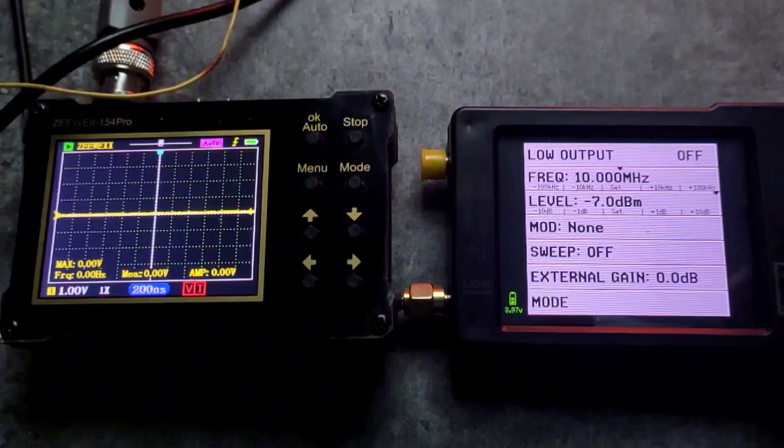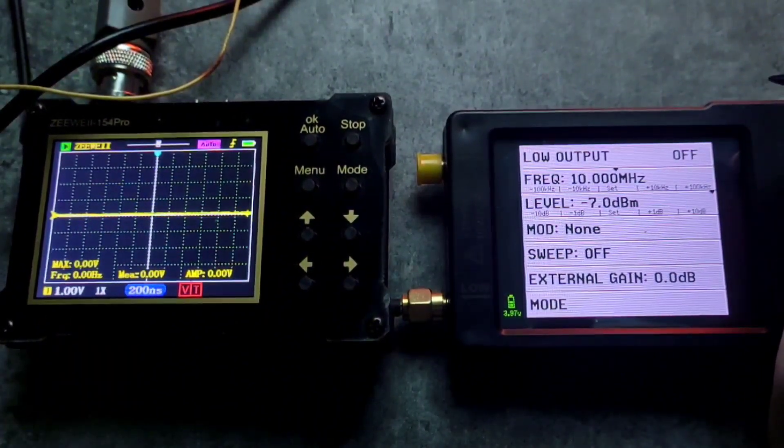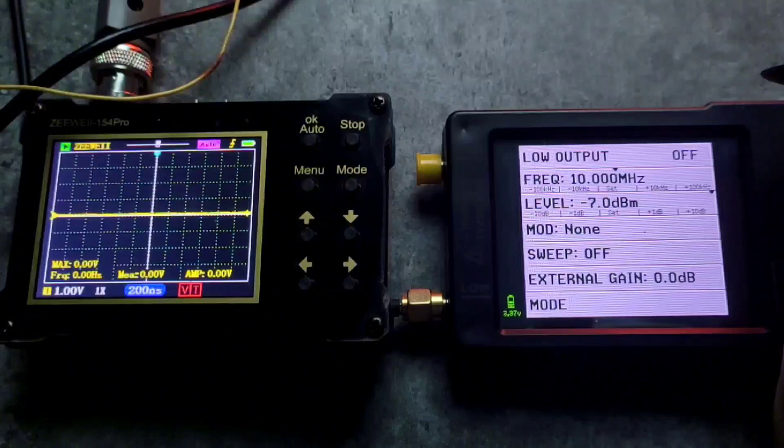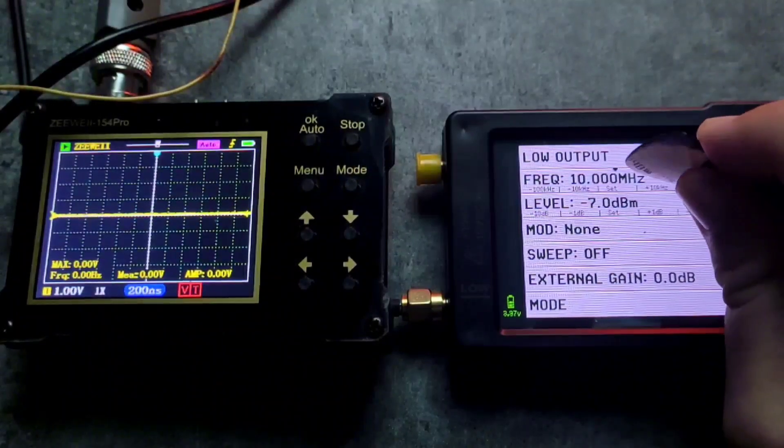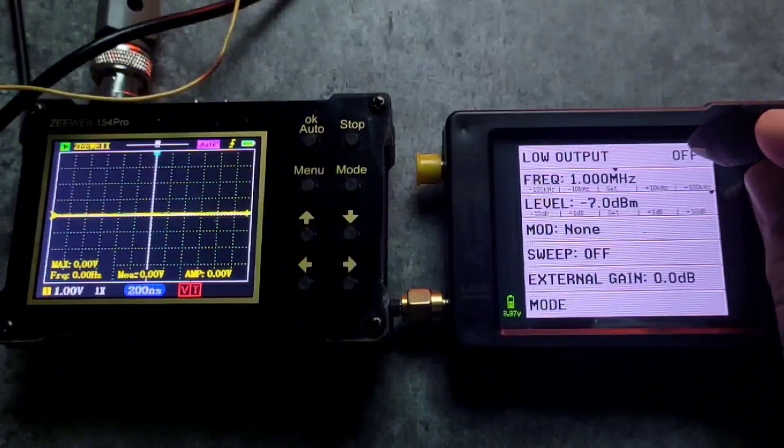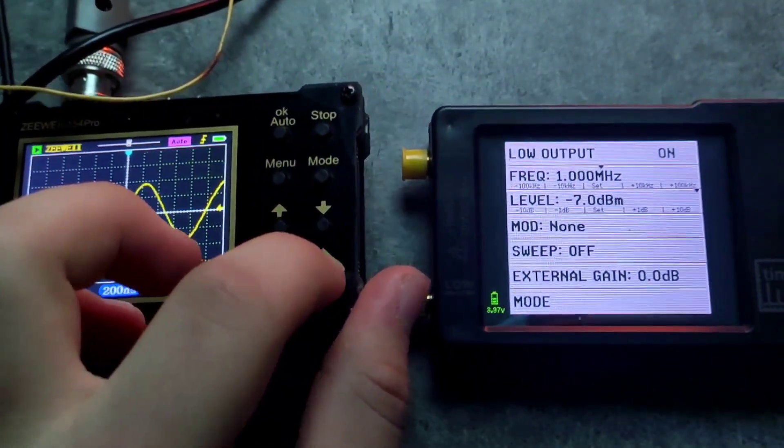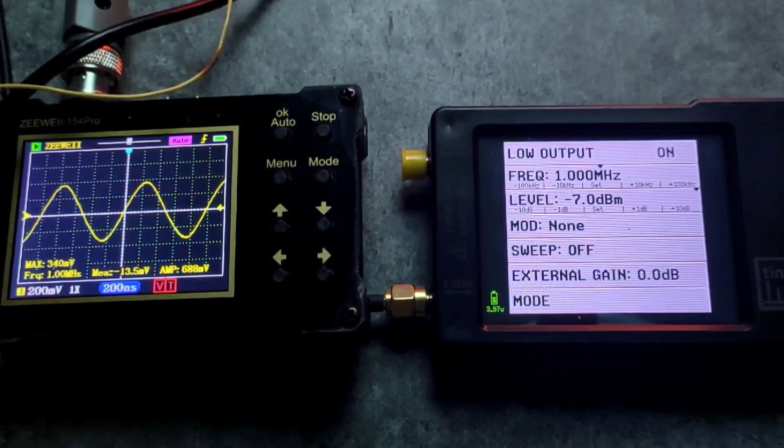Let's test the frequency generator that the TinySA has. My oscilloscope can unfortunately do up to 18 MHz. However we can actually do for example 1 MHz as well. Now I am going to turn it on and there we have 1 MHz.